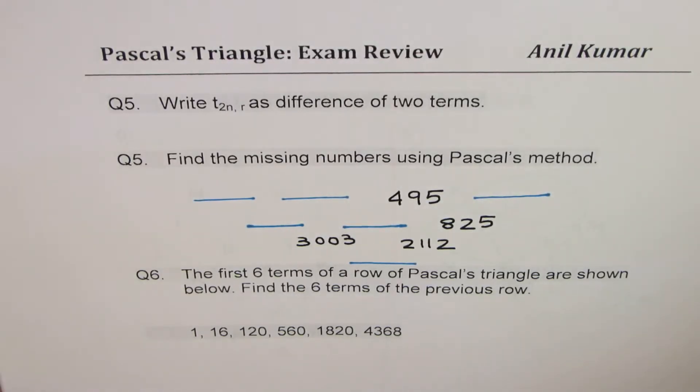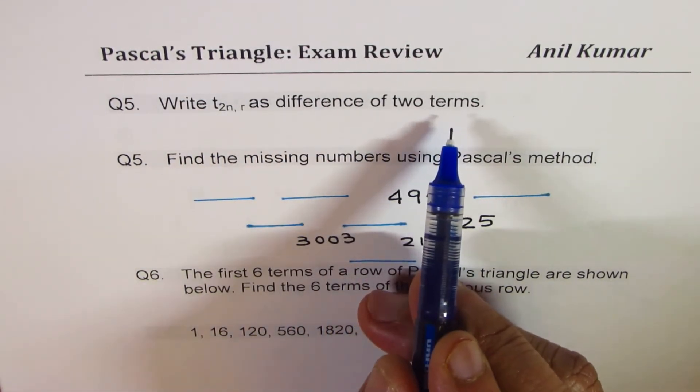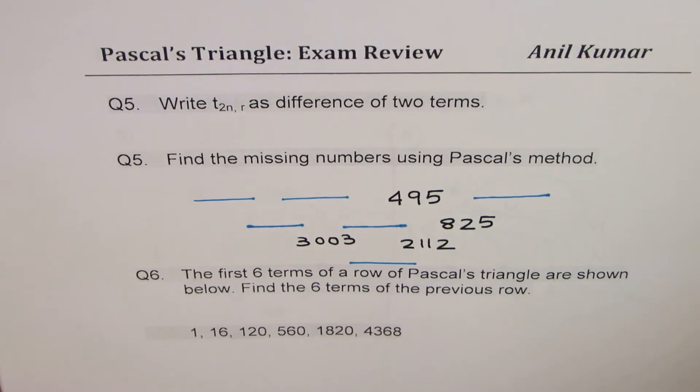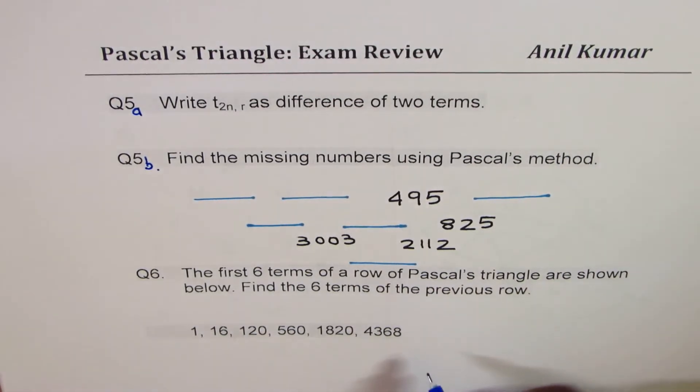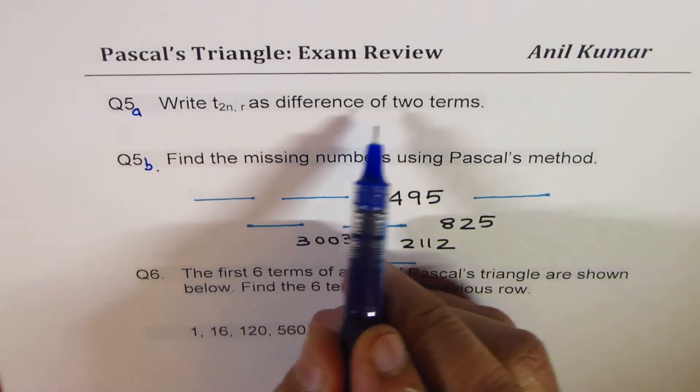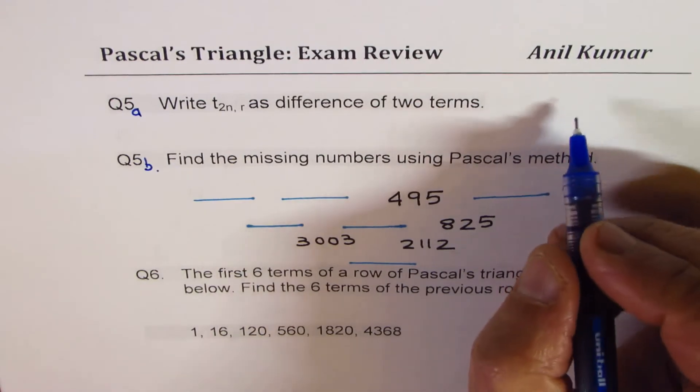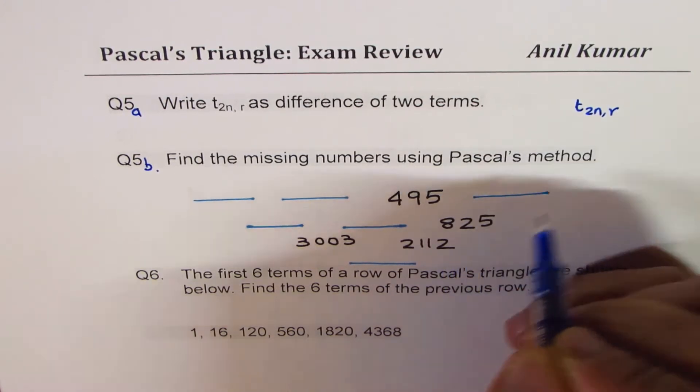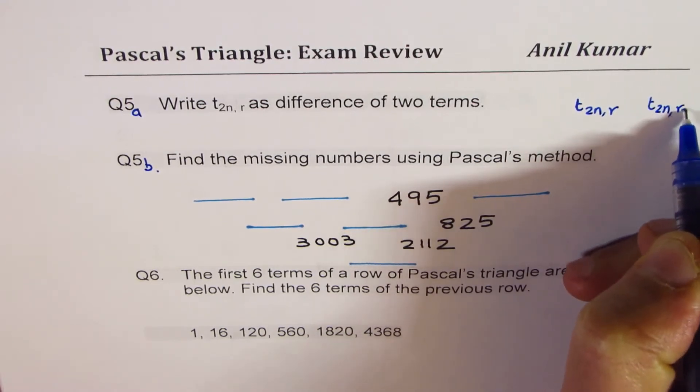Question number 5. Write t2nr as difference of two numbers. So this is what you do. Write t2nr as difference of two numbers. You can pause the video, copy these questions, and then look into my suggestion. Now, how could you do this? Well, we can use a strategy. Since we want difference, that means, if we have t2nr as a number here, then the number next to this will be t2nr plus 1.